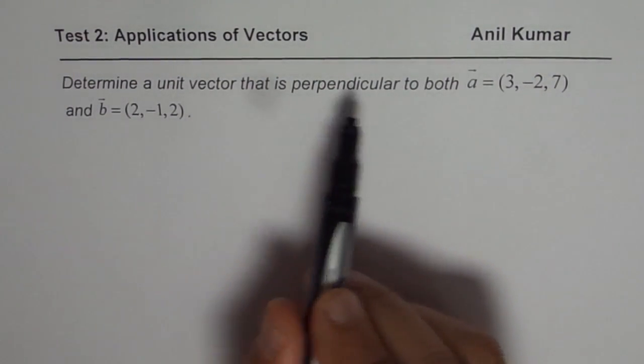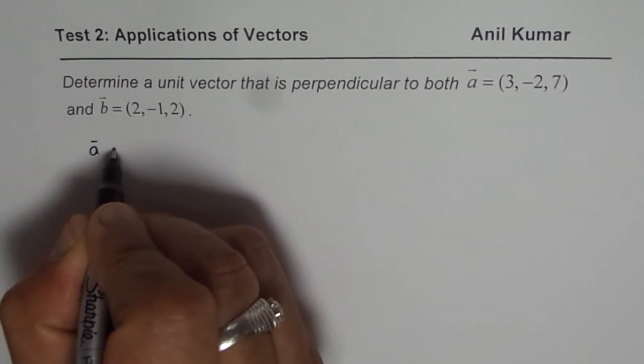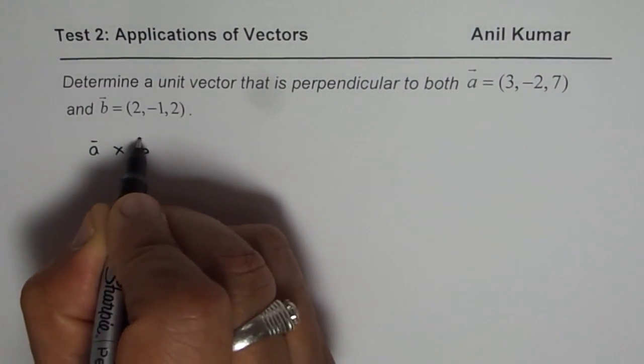So perpendicular means you are looking for cross product. So we'll find cross product of a and b.